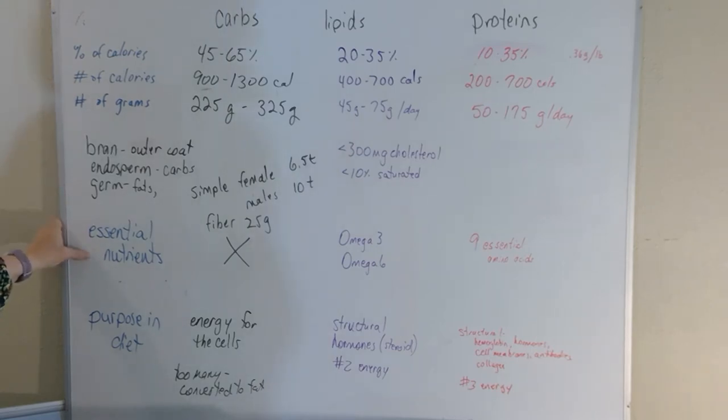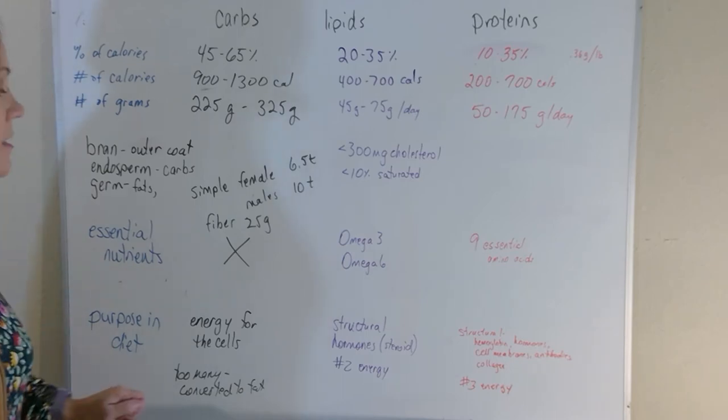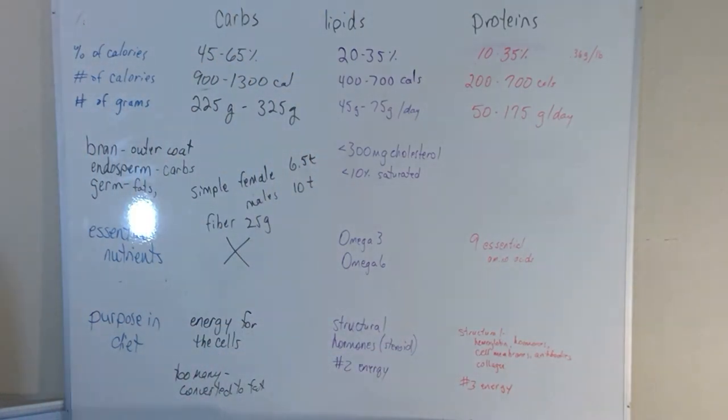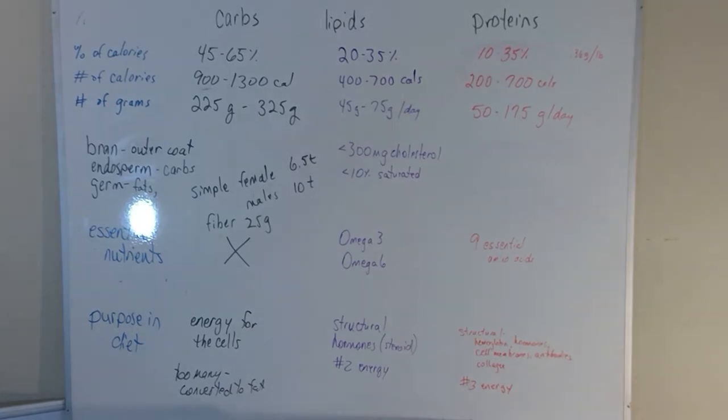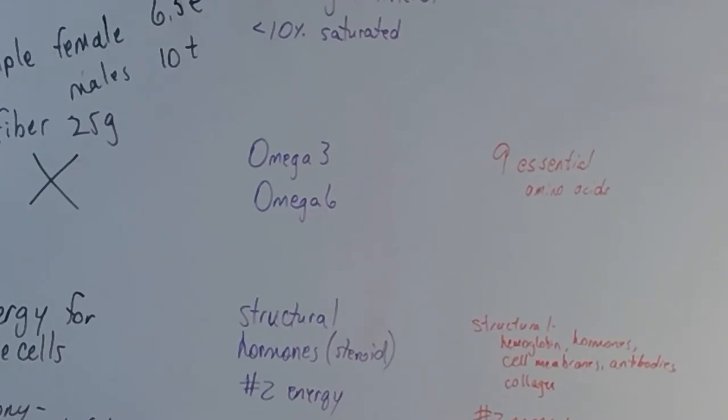Come down and we look at our essential nutrients. Our essential nutrients, you have nine essential amino acids, which means that your body cannot make those amino acids. So you have to eat them. The purpose in the diet is to structurally build things in your body. You can see here that it says on our picture, I'm going to enlarge it here, the structural components that are going to be made from proteins.